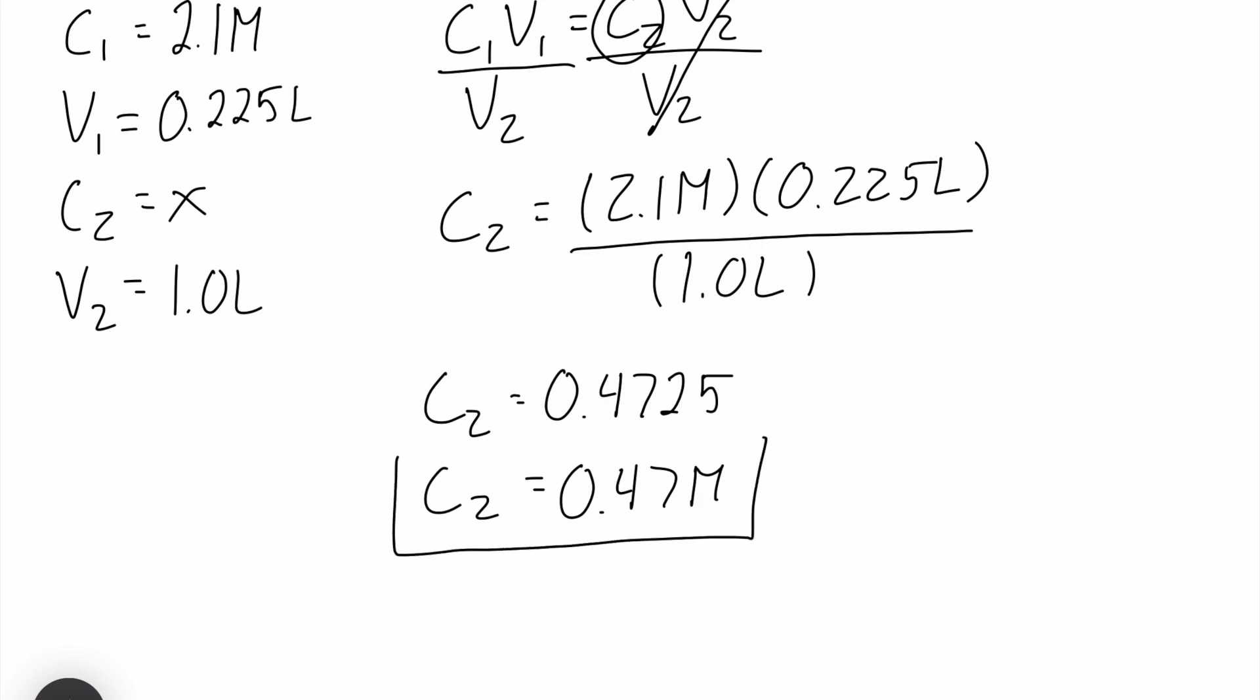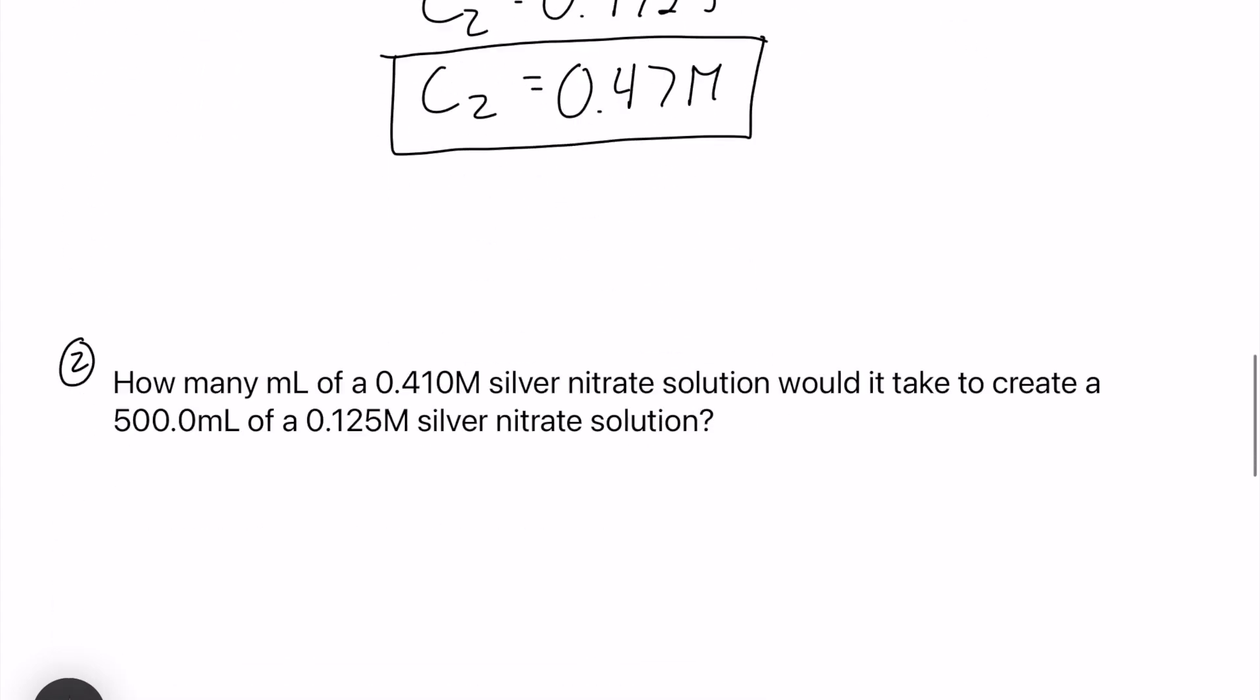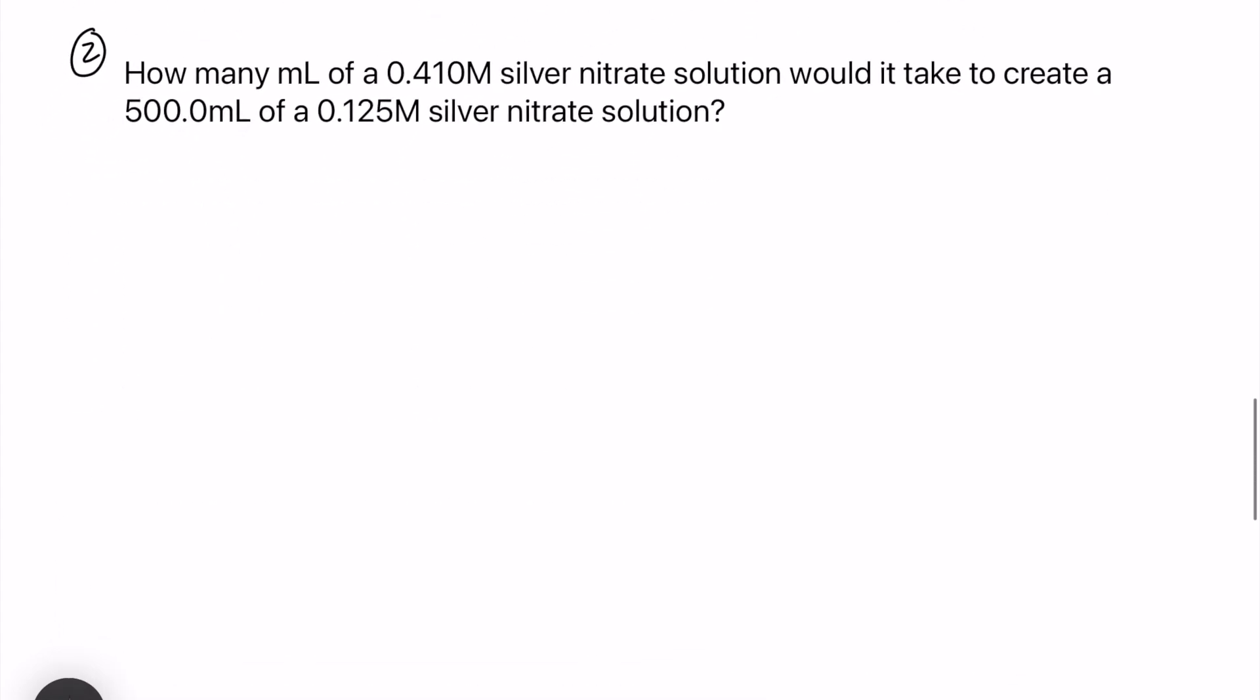So that is our answer to number 1. Let's move on to number 2. Number 2 states how many milliliters of a 0.410 molar silver nitrate solution would it take to create 500 milliliters of a 0.125 molar silver nitrate solution. So again we're going to go through the same steps here.